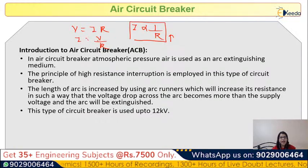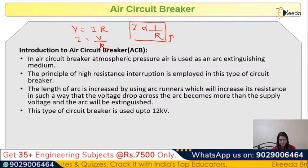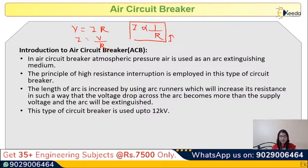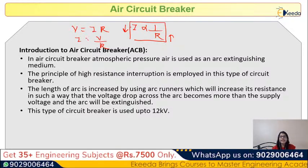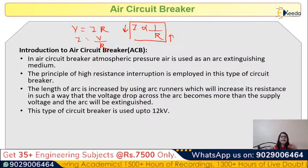How do we increase resistance? Using the formula R = ρL/A, resistance is directly proportional to length. So if we increase the length of the arc, resistance increases and current decreases. This method — eliminating the arc by increasing its length to raise resistance and decrease current — is called high resistance interruption.